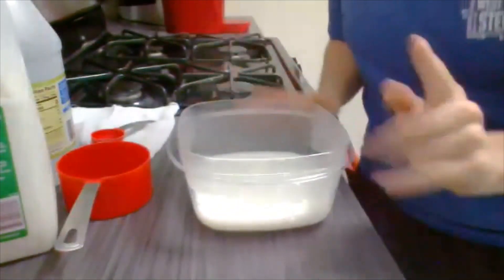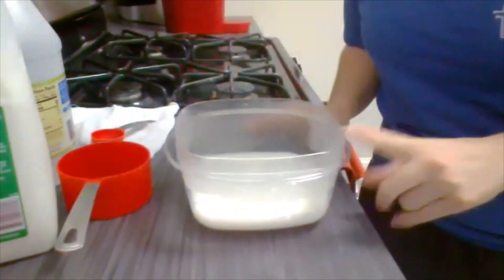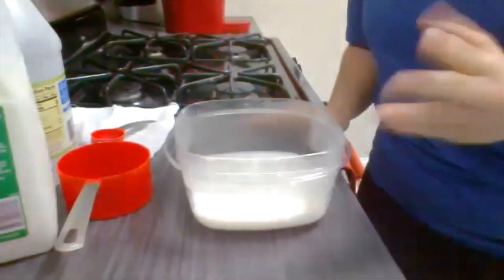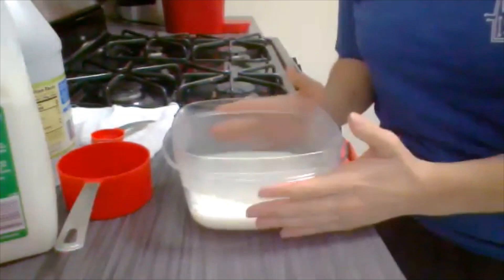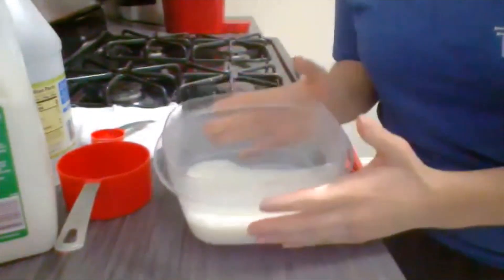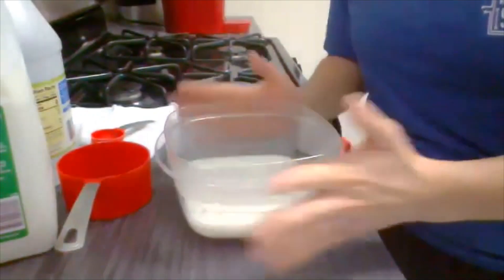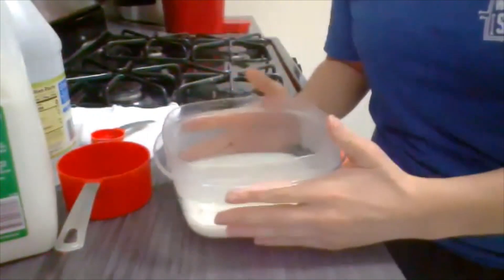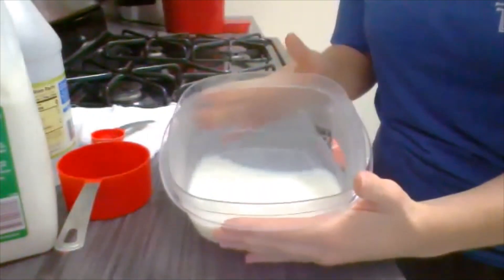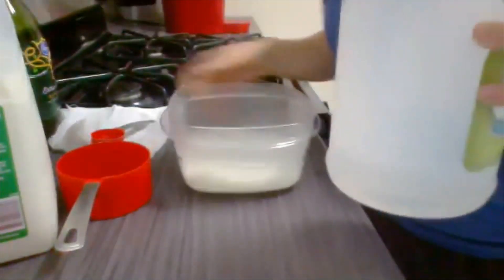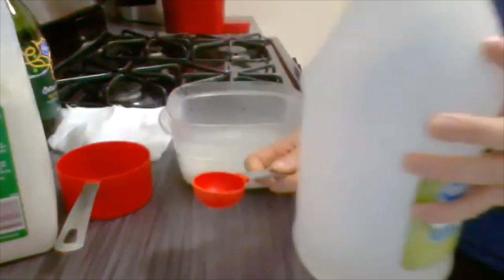Alright, so I stuck this in for 30 seconds, checked it, another 30, checked it, and then finally for 30 more seconds and it is finally steaming. So I put mine in for a total of a minute and 30 seconds and checked it at 30 second intervals. So now that my milk is steaming, what I want to do is take one tablespoon of white vinegar.